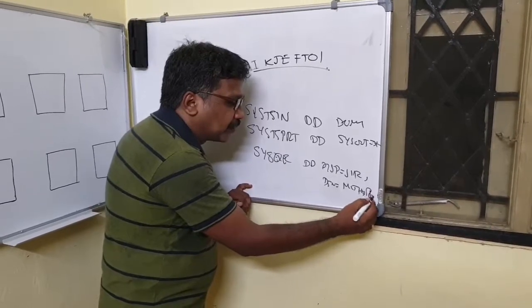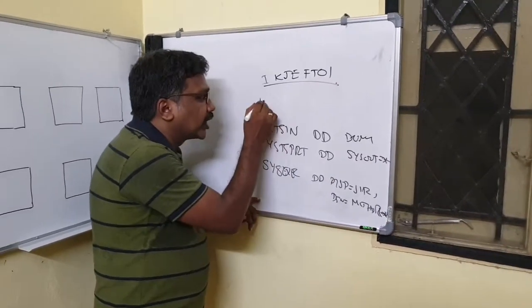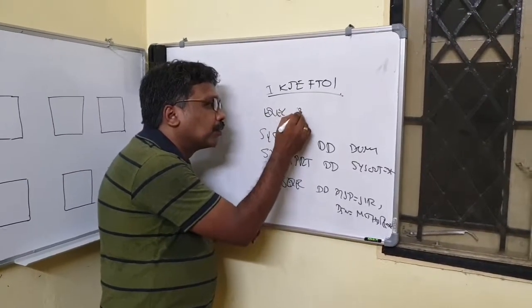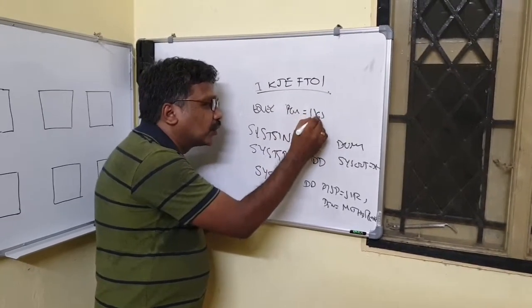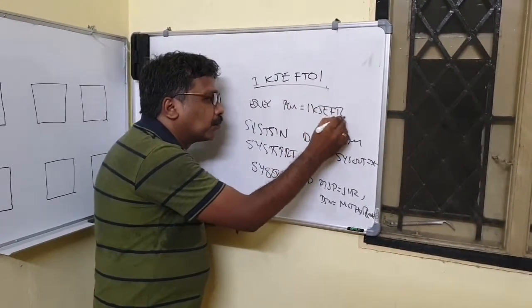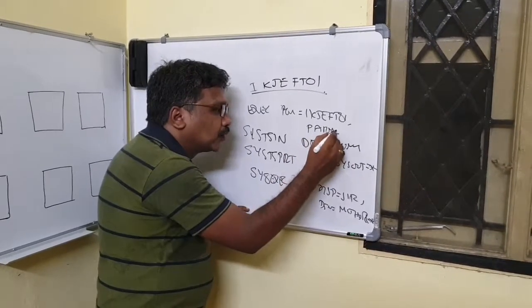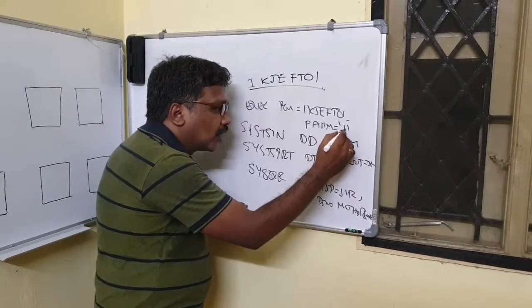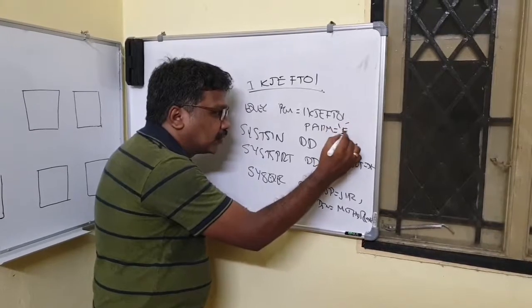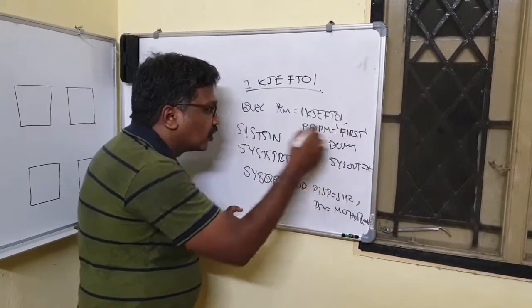This is equal to share, DSNAME equal to MUTU dot REXX, that is my source code library where I have a source, and your EXEC PGM should be IKJFT01.